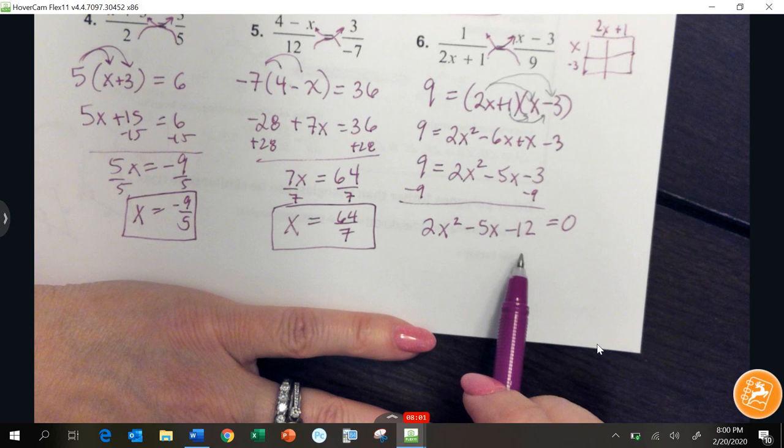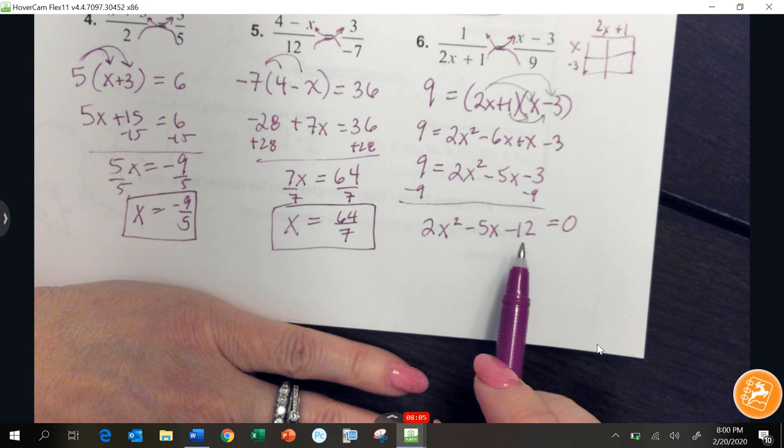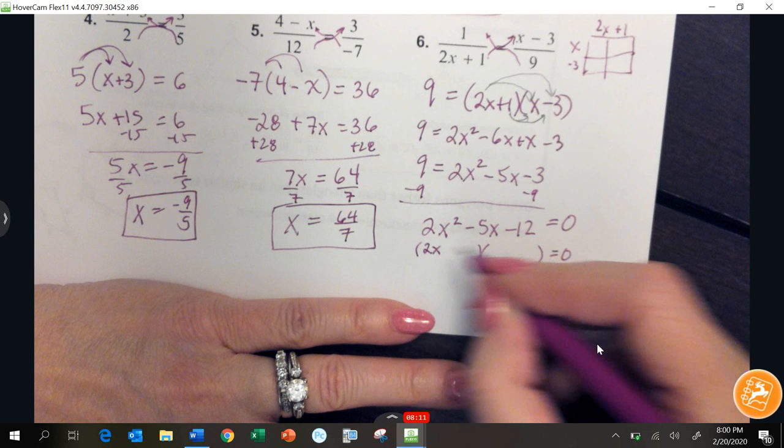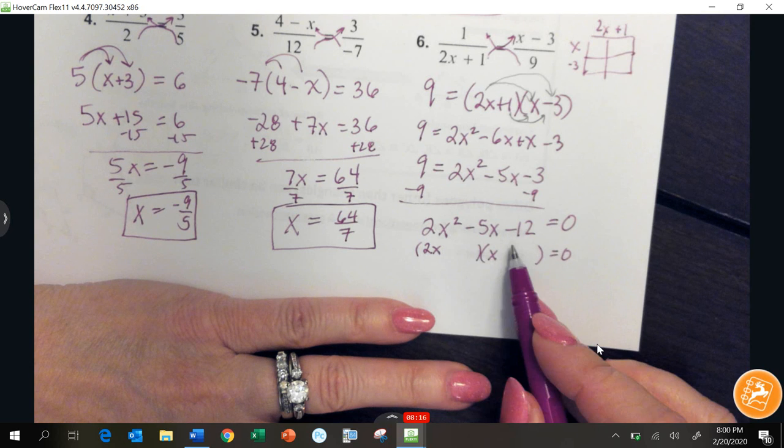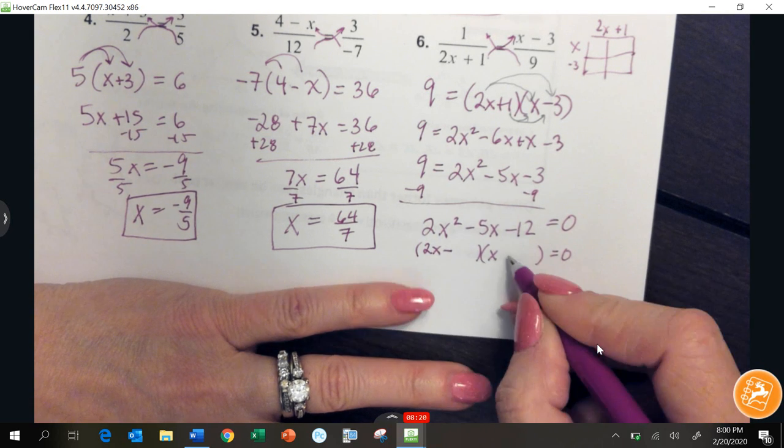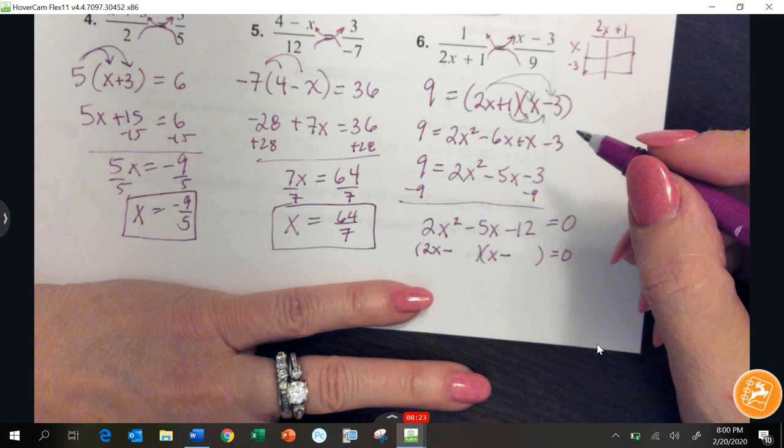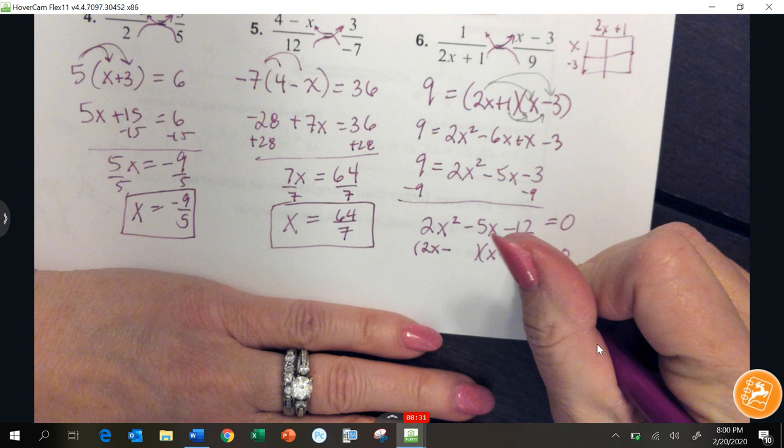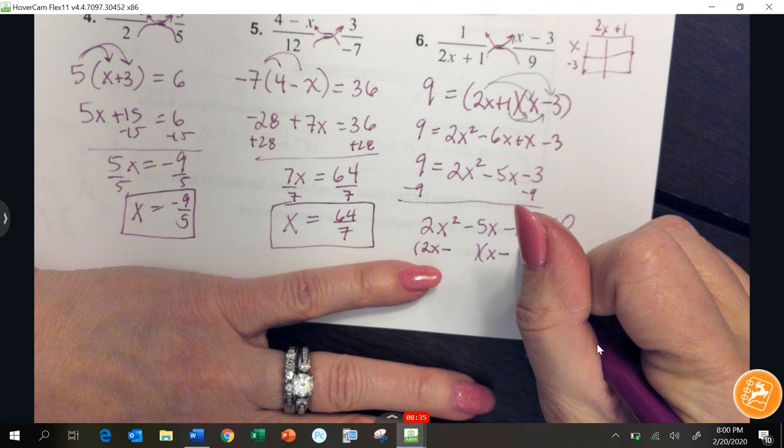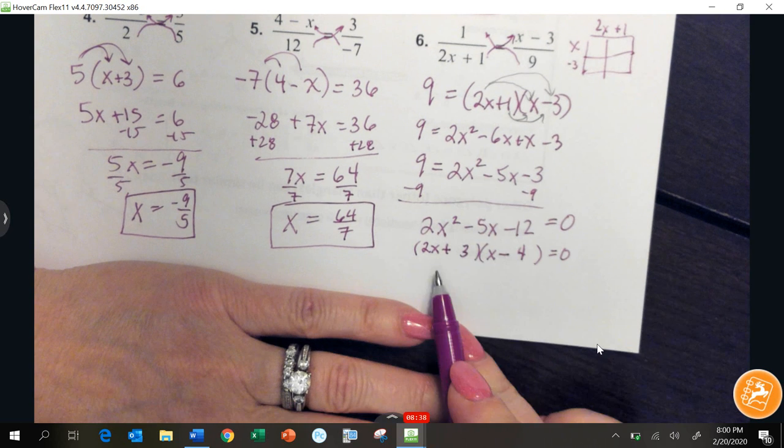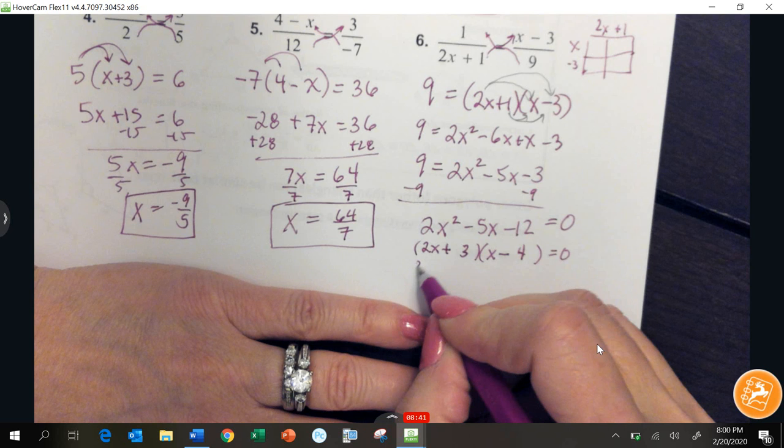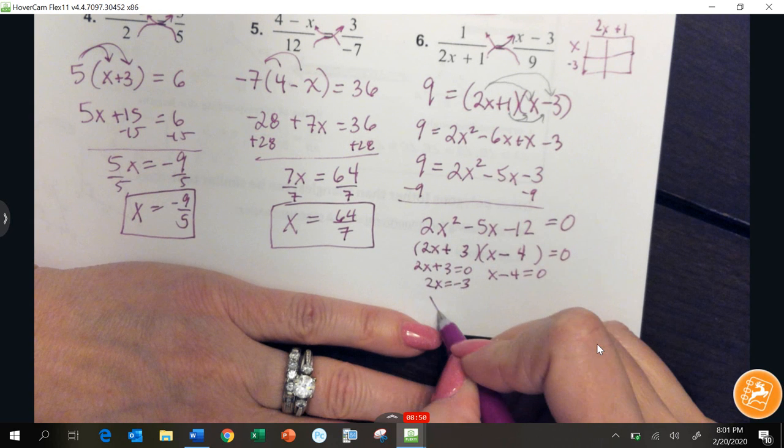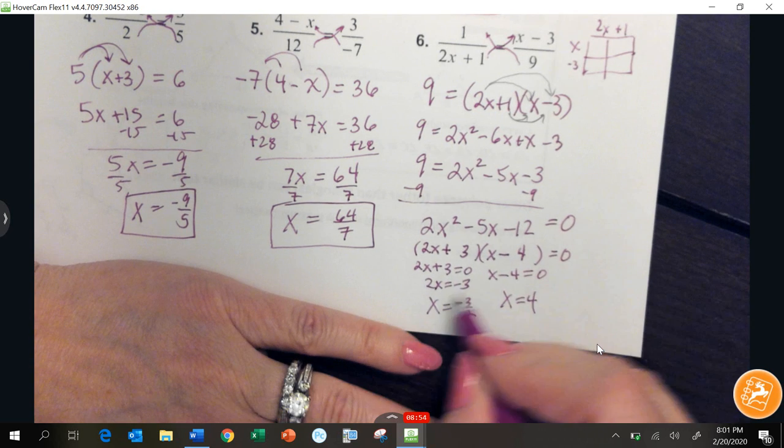All right, at this point, in a review, I'm not going to expect that you know this one time from this one video. But we would need to figure out the factors. This is familiar to you from Algebra 1. All right, so 2x times x minus 4, and then plus 3. So that is the equation factored. From here, you take each factor, set it equal to 0, and you solve each factor. So I get 2x equals negative 3. So x is negative 3 over 2. And x minus 4 equals 0, so x equals 4. So I have two answers for that.